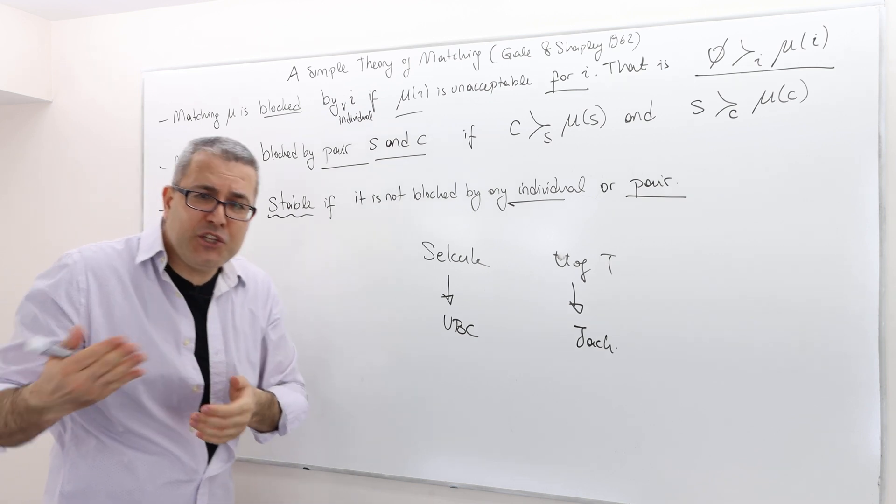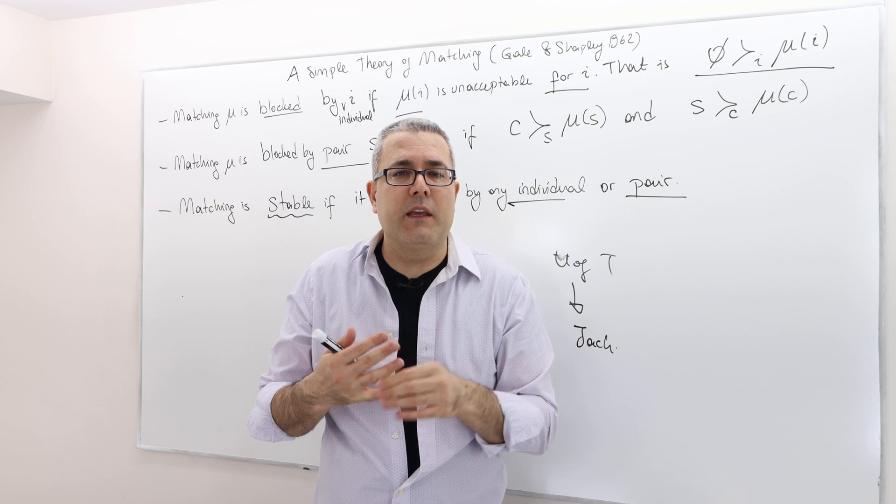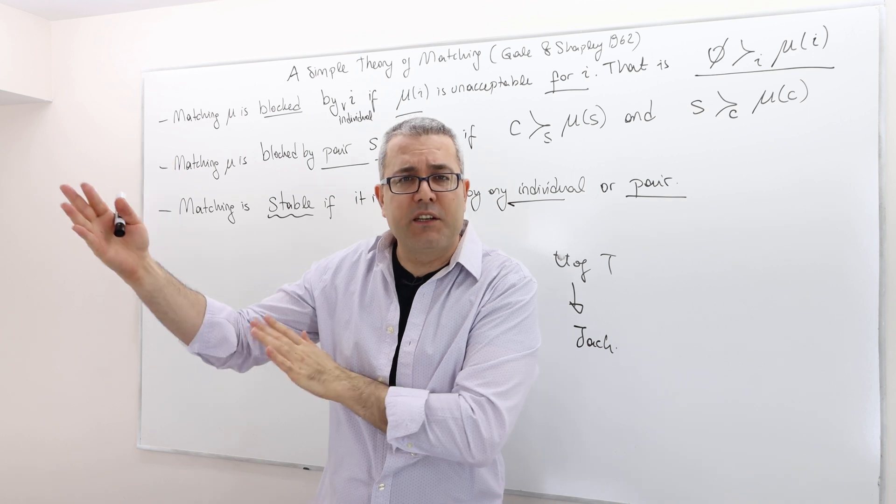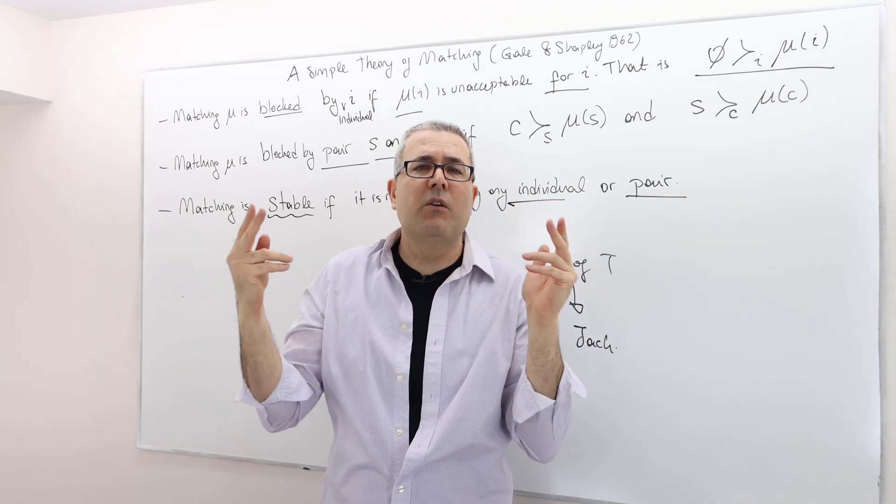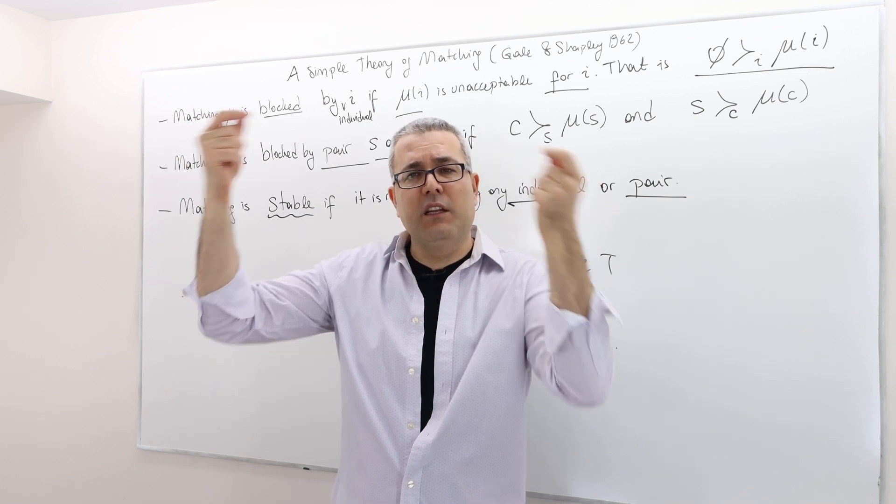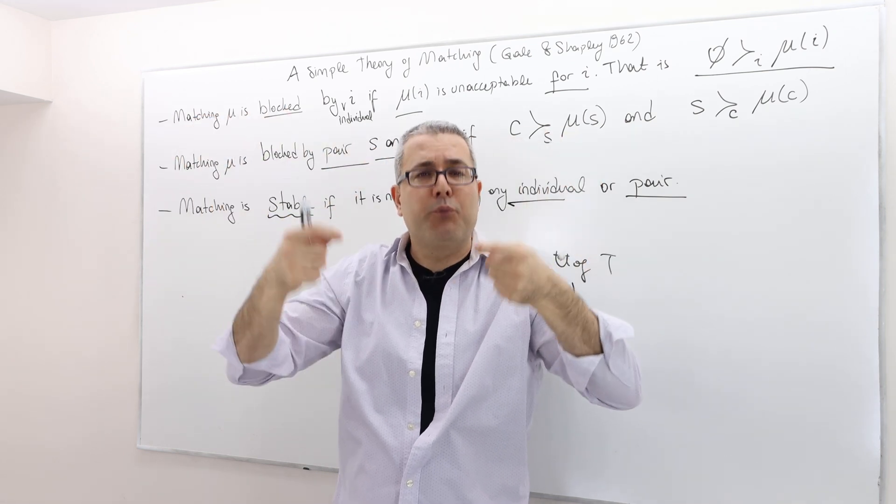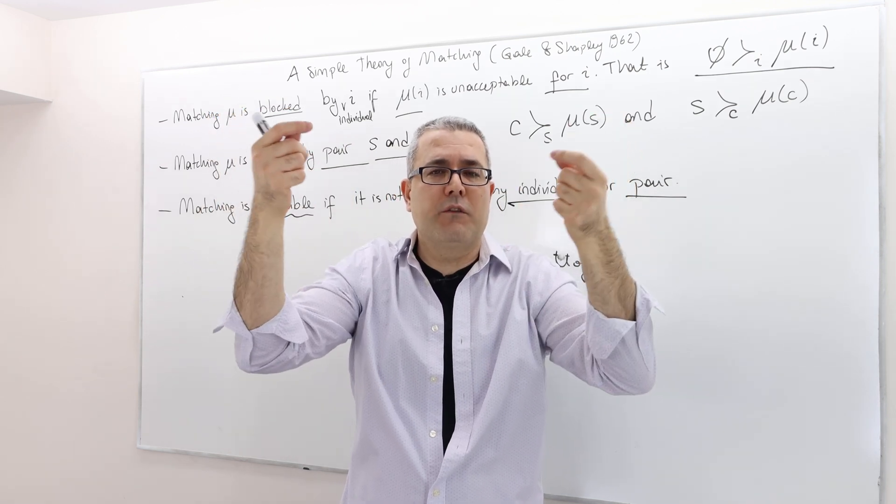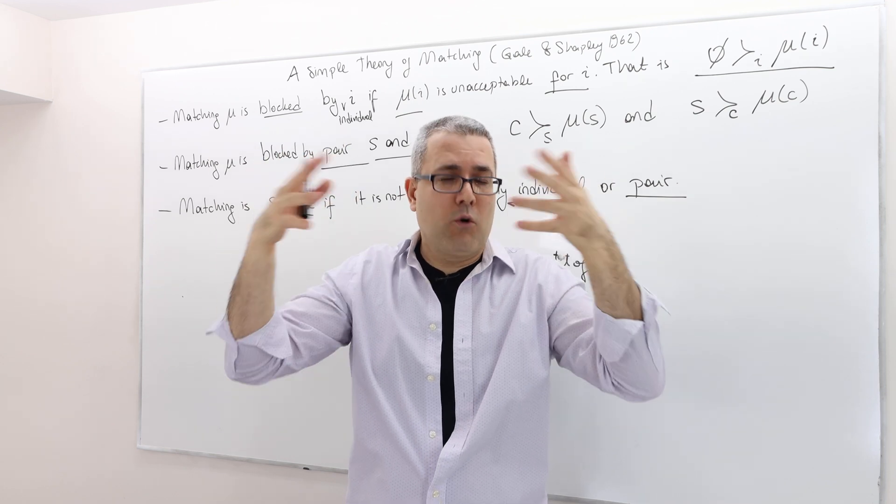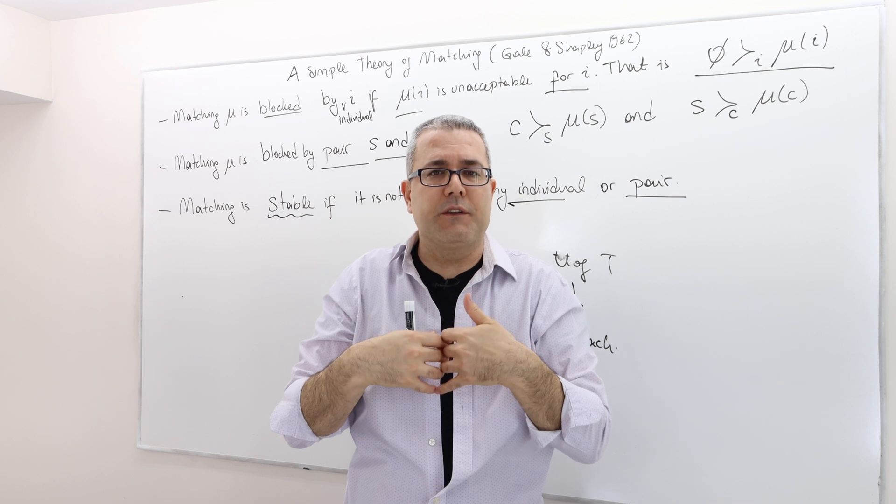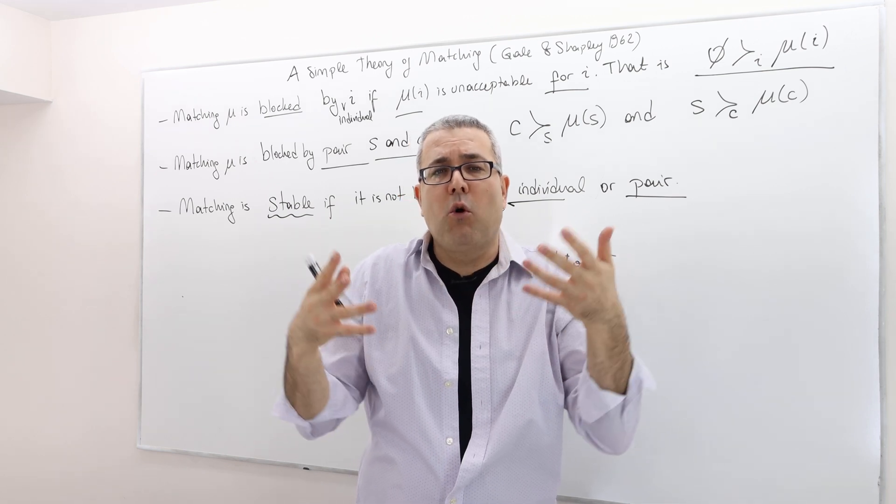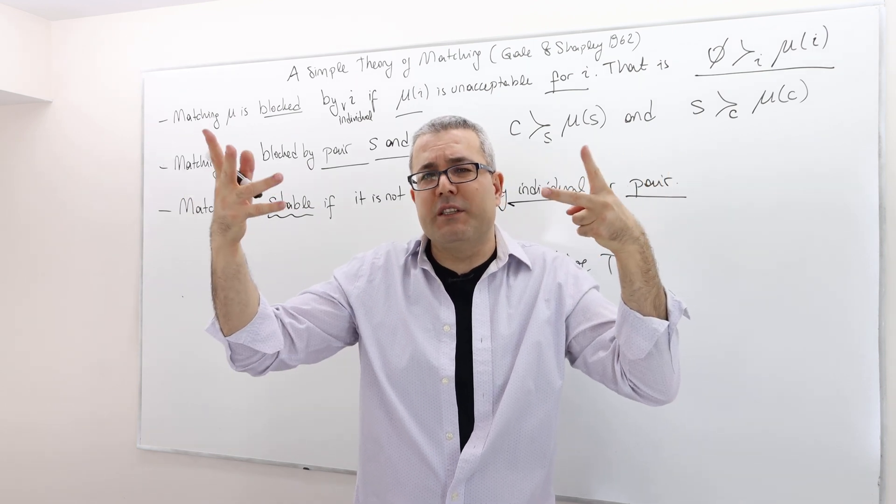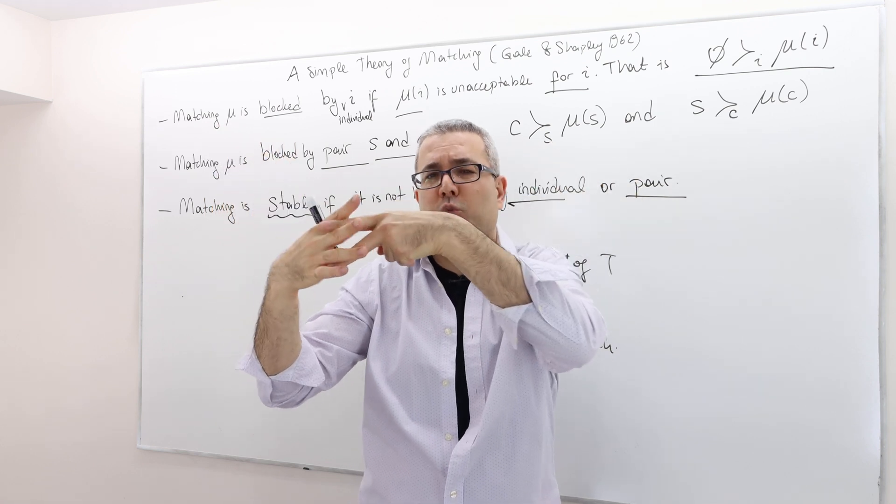But the thing is, it makes sense to restrict our attention to coalitions of size one and size two. Why is that so? Matching, intuitively speaking, matches one guy on one side to another guy on the other side, student and college. So the thing is, if one student and college are not happy with their matches and they prefer one another over their matches, they obviously are going to break the coalition or match and then form their own coalitions. But the thing is, what does it mean coalition of three is going to break the matching? Two students and then one university? Yeah, but those two students cannot be matched with one university.